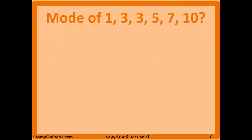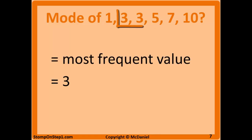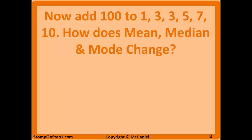To illustrate how to calculate mode, what would be the mode of these six values? You look and see that three is on there twice and the other ones are only on there once, so the mode is three.